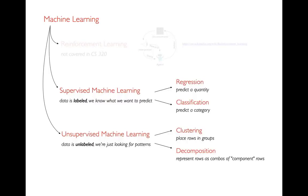Within supervised machine learning, there are two things we'll learn: regression, where we try to predict a quantity, and classification, where we try to predict a category. In any case where we're trying to predict something, that's a supervised problem — the data has labels, usually a special column telling us a quantity like house price or a category. In unsupervised learning, there is no special label column; we're just trying to find general patterns in the data.